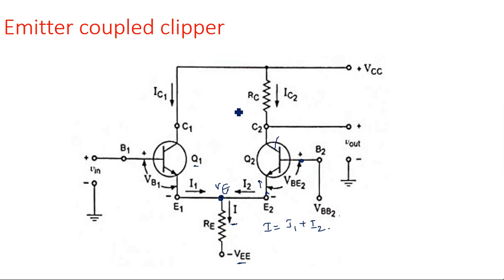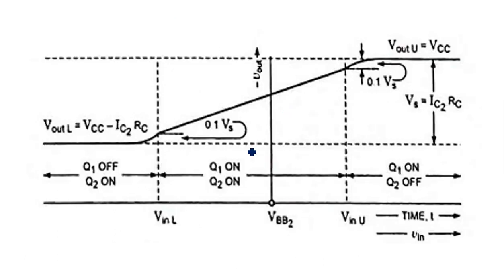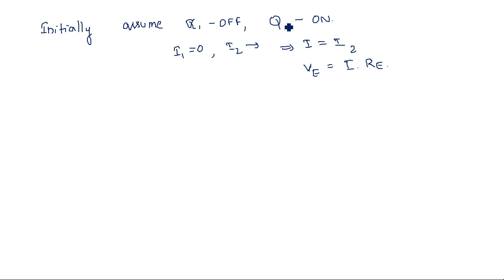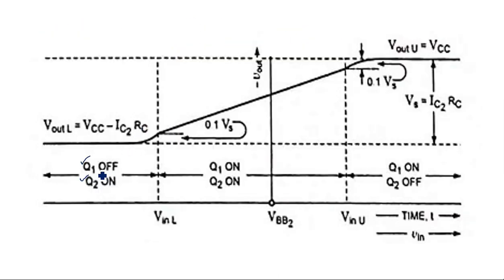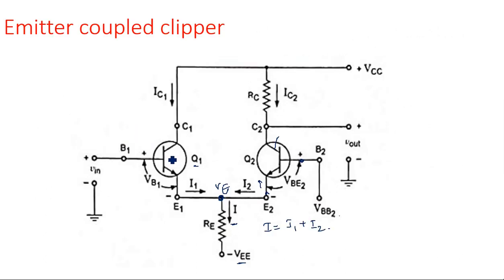RC is the collector resistor for Q2, which limits the current IC2. For Case 1 — Q1 off, Q2 on — the output voltage, taken from the collector of Q2, is: VOUT = VCC − IC2 × RC.